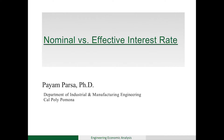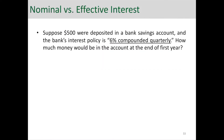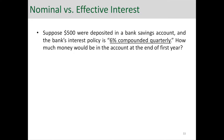Hello everyone. In this video we're going to discuss the difference between nominal and effective interest rate. Let's start with this simple example. Suppose $500 were deposited in a bank savings account and the bank's interest policy is 6% compounded quarterly. How much money would be in the account at the end of first year?